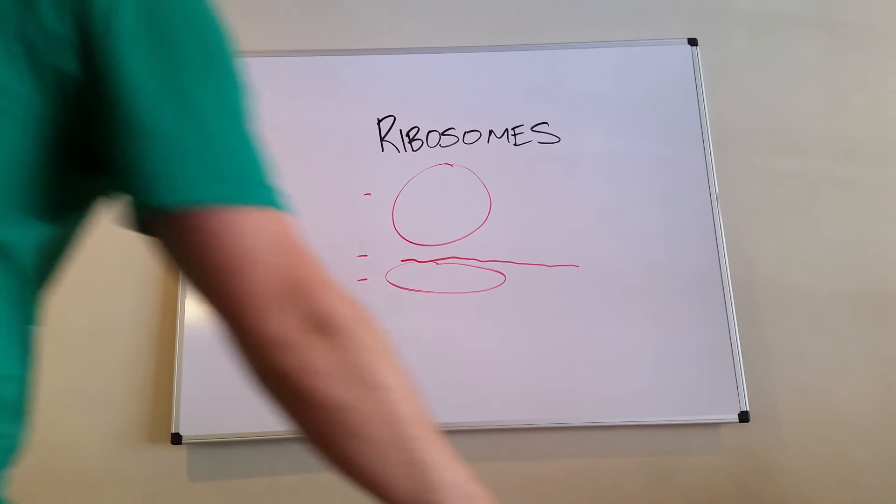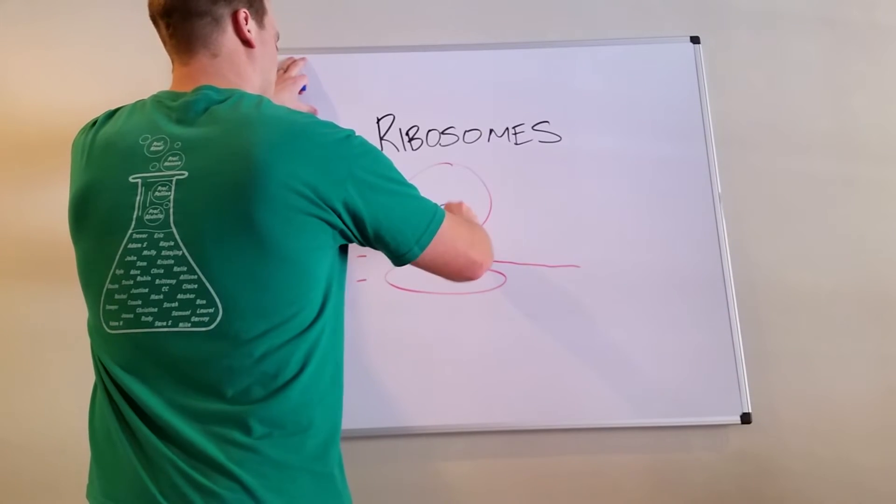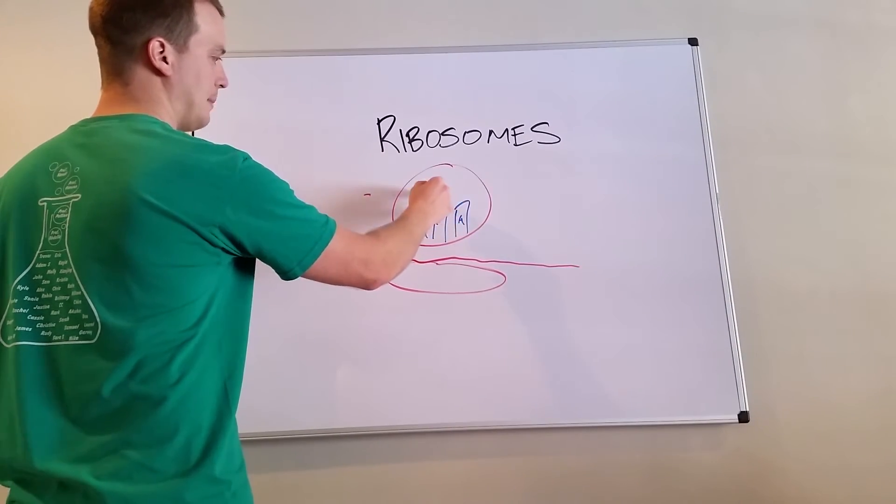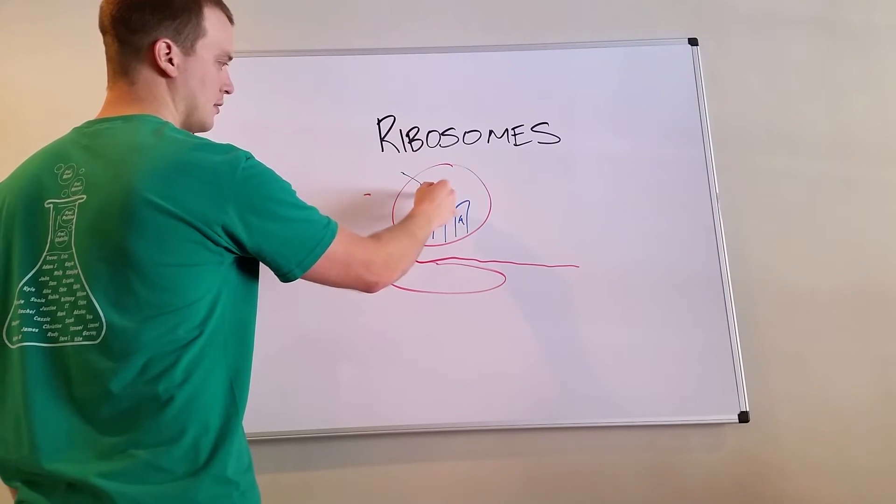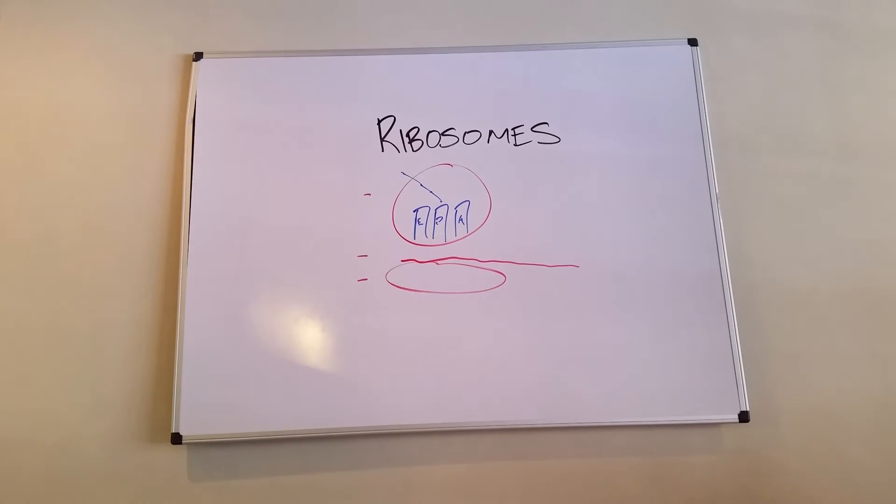Now what happens, as you all know, is translation occurs up here. We have other videos on this, but you have your E, your P, and your A sites. You have your growing peptide chain as the tRNA brings in a new amino acid.